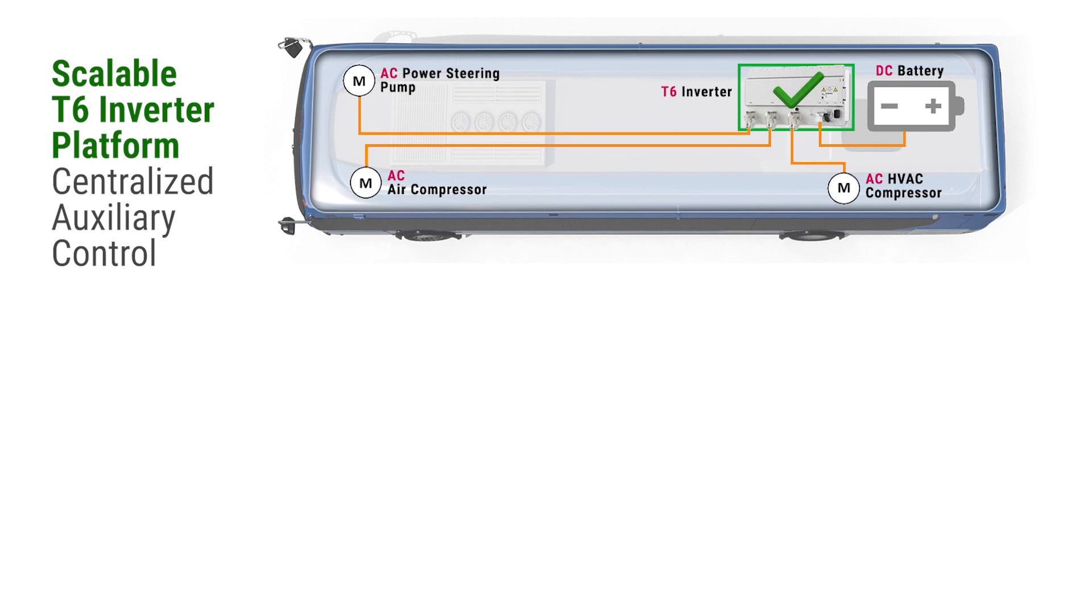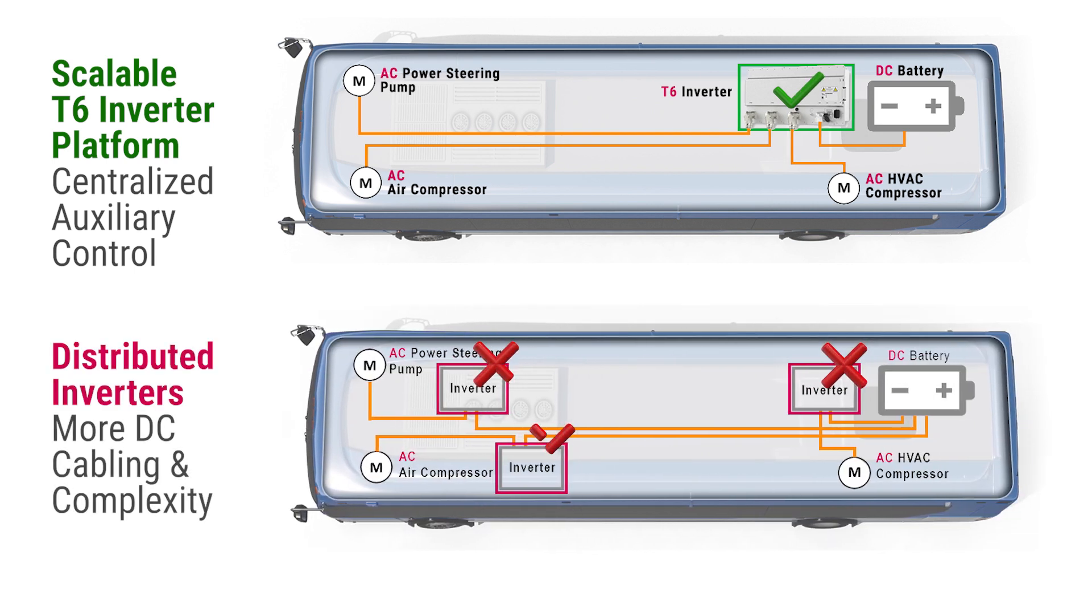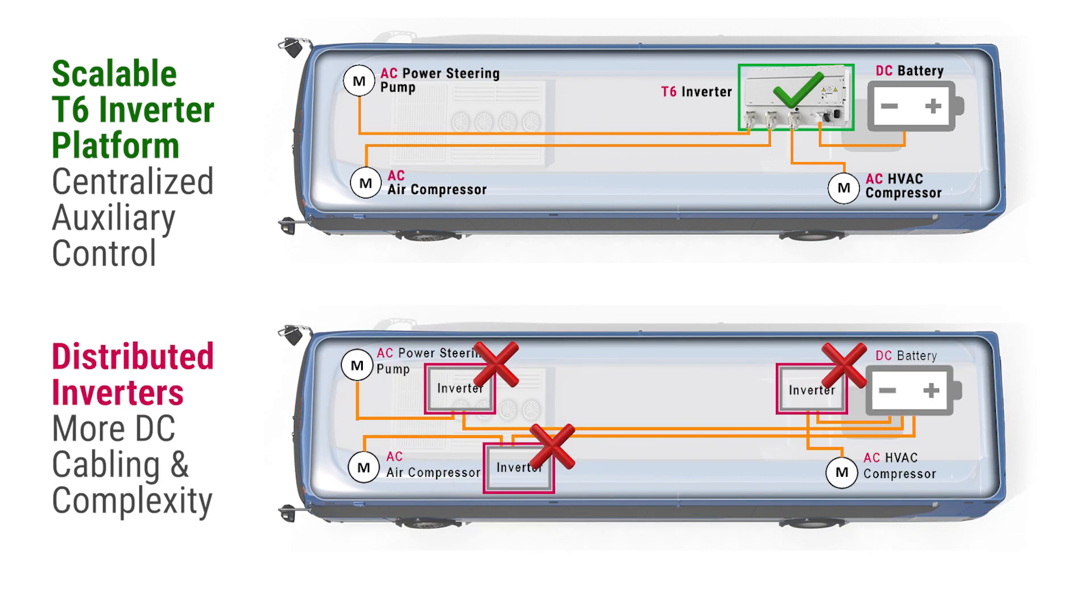These are just some of the ways that the T6 protects against EMI. In this way, the T6 can be mounted in a central location so it doesn't have to be mounted right next to the motors. Please contact a KEB applications engineer to learn more.